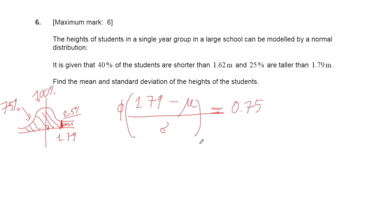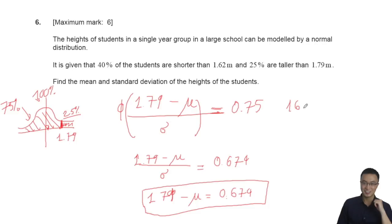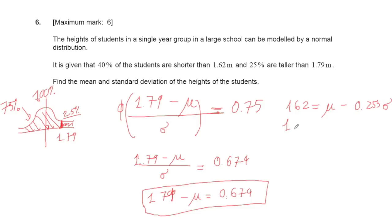The Z-value for 0.75 is 0.674. So (1.79 − μ) / σ = 0.674, giving the second equation: 1.79 = μ + 0.674σ.